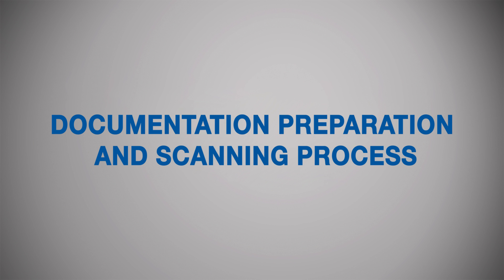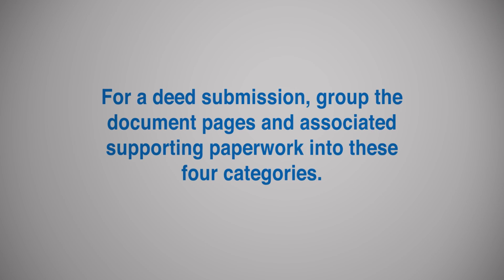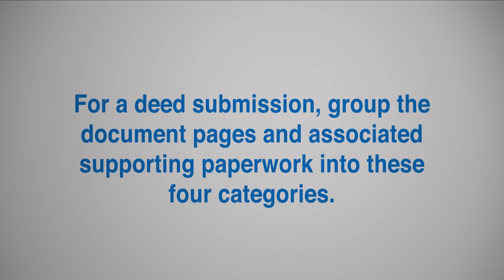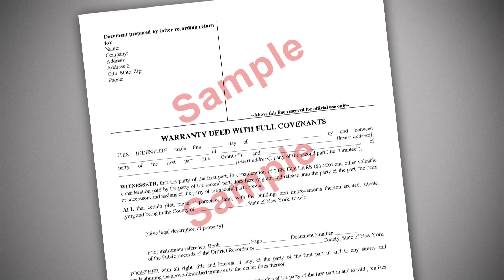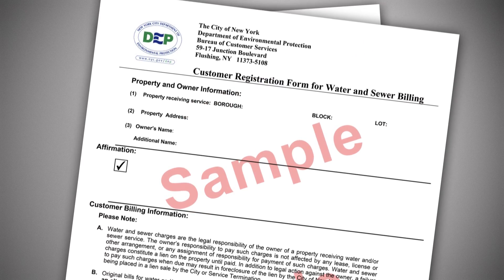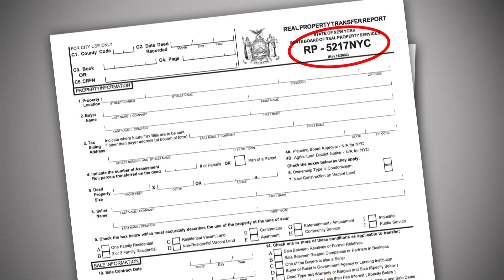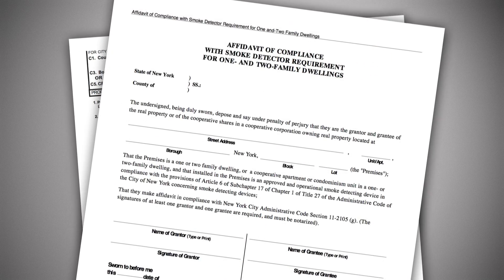Documentation, Preparation, and Scanning Process. For each document you plan to submit, you'll need to prepare and scan the document plus any associated supporting documentation and tax forms. For a deed submission, group the document pages and associated supporting paperwork into as many as four categories. One: the deed document to be recorded. Two: the supporting public documentation, which includes your DEP Water and Sewer Form, your RP-5217 Real Property Transfer Report, and your Smoke Detector Affidavit.